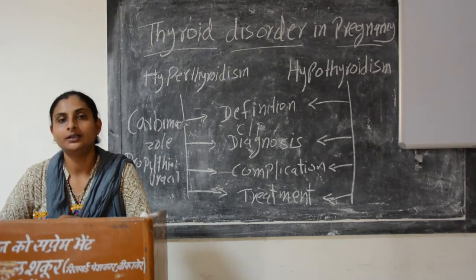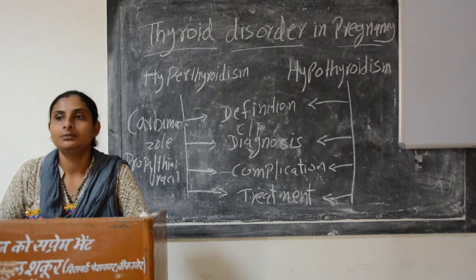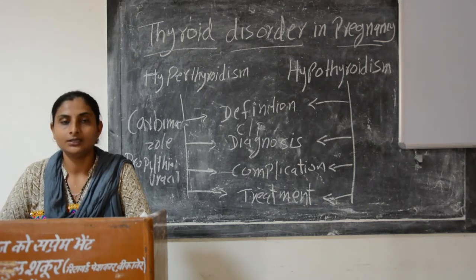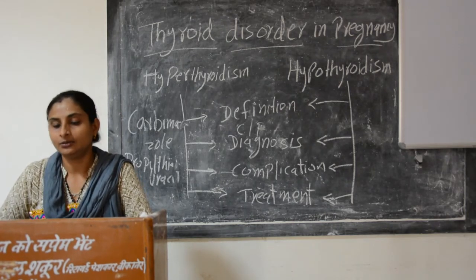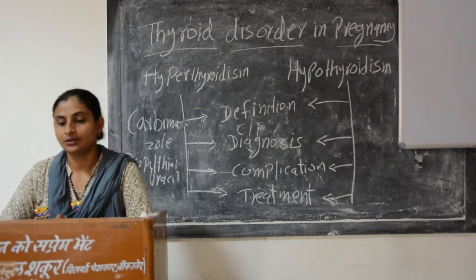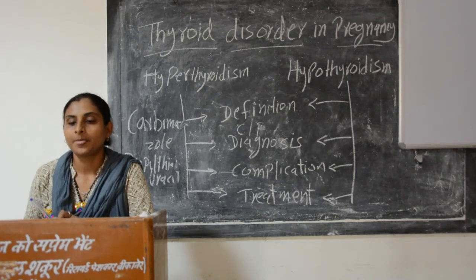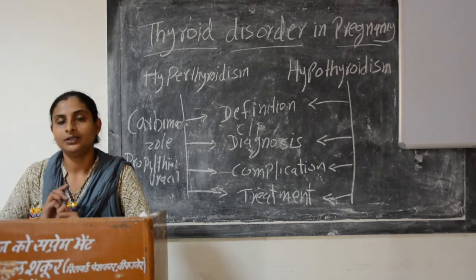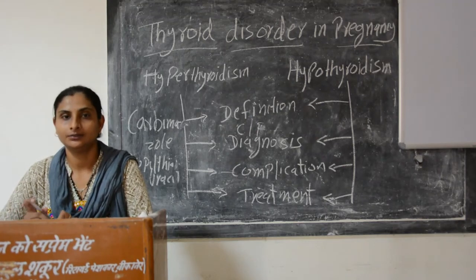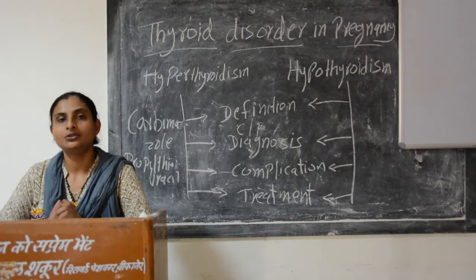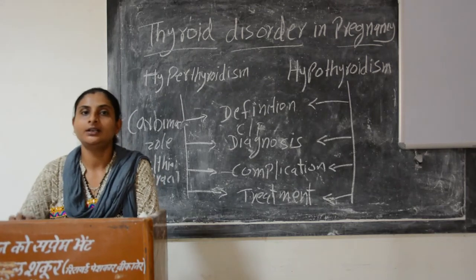If hypothyroidism is untreated, miscarriage chances are higher, along with anemia, preeclampsia, and other complications. Fetal complications include stillbirth, fetal growth retardation, fetal immaturity, birth defects, and mentally retarded fetus due to inadequate thyroid hormone for brain development.